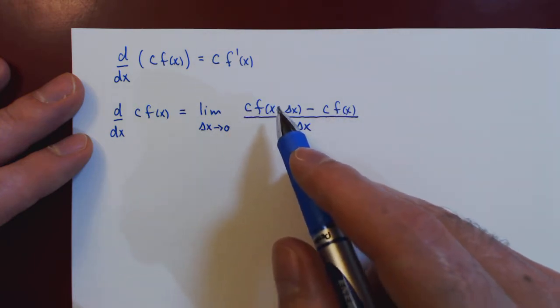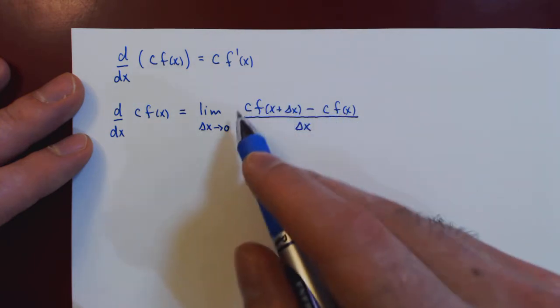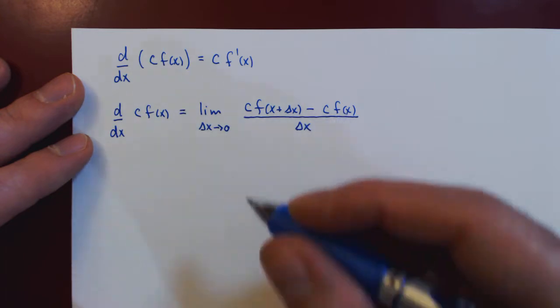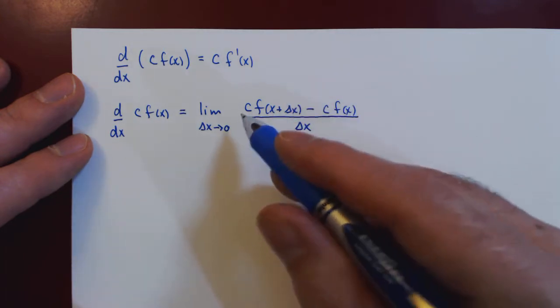Now c is a multiple of the first and second terms, so it can be factored out of the numerator, and at the same time of the entire fraction.